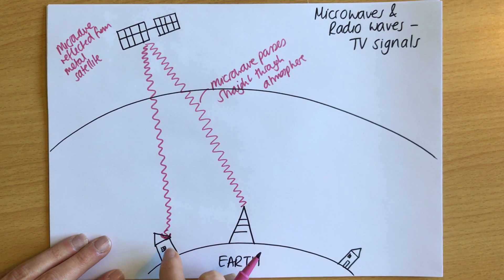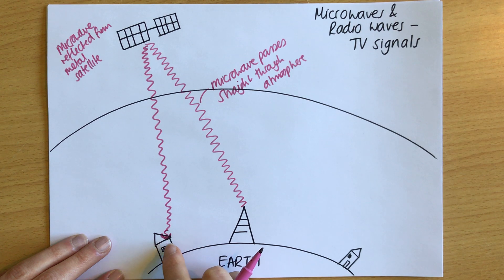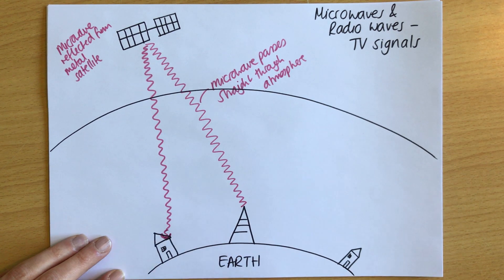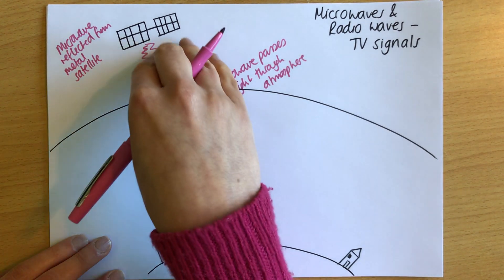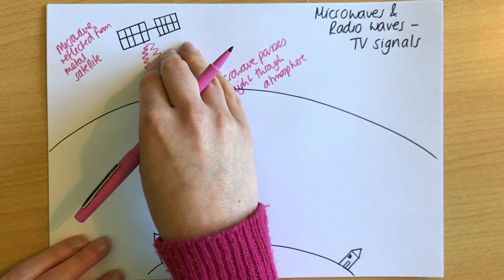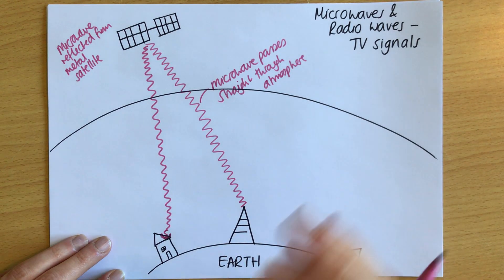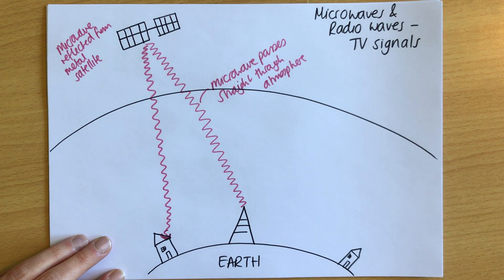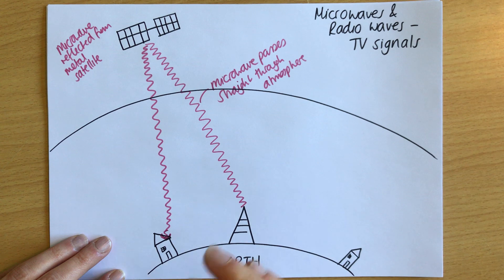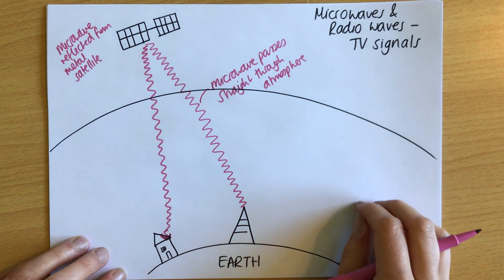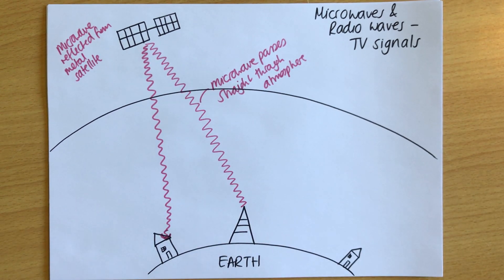This is why, if you look at a block of flats with several satellite dishes, all the dishes will be facing the same way. They always face the satellite and don't move around to find the signal — they're fixed, facing the satellite, always pointing towards it.